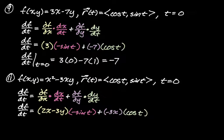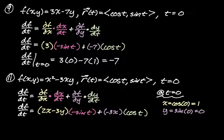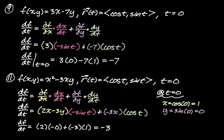Now we evaluate at t = 0. At t = 0, x = cos 0 = 1 and y = sin 0 = 0. So every x becomes 1, every y becomes 0, and every t becomes 0. df/dt = (2·1 - 3·0)(-sin 0) + (-3·1)(cos 0) = (2)(0) + (-3)(1) = -3. That's our answer.